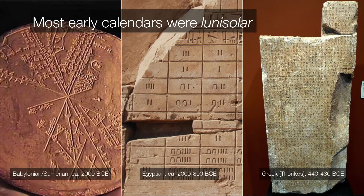Many early calendars were lunisolar calendars. And in fact, some lunisolar calendars still exist today, namely the Hebrew, Jain, Vietnamese, and Islamic calendars. These are all examples of calendars that would attempt to synchronize the phases of the moon with the seasons. And for this reason, the dates of several religious holidays will vary from one year to the next, so that they can remain in sync with the moon's phases.